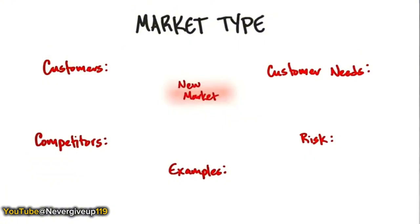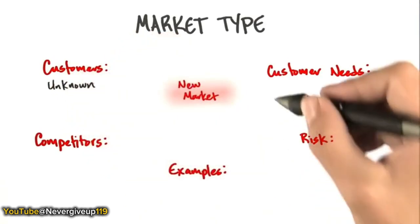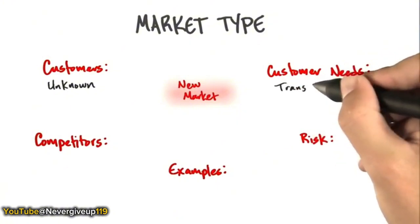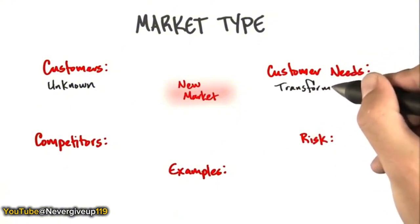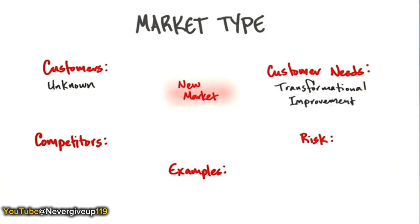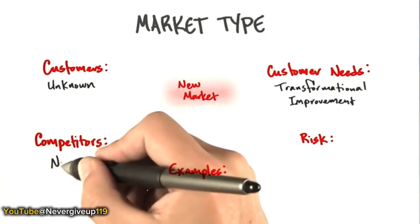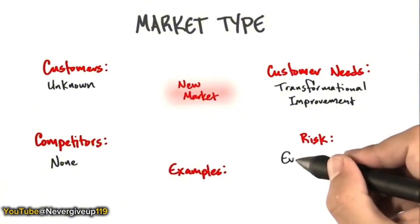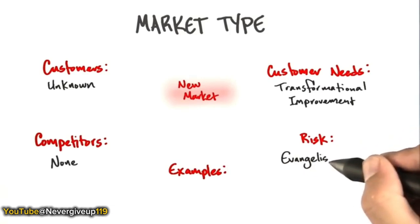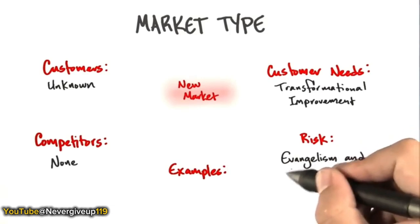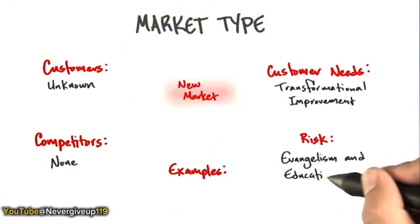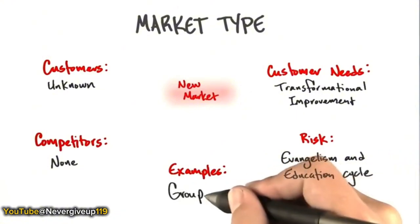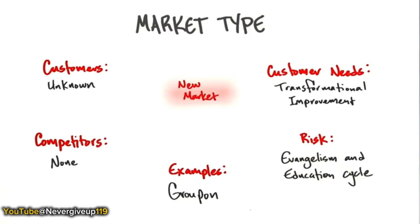In a new market, the customers are really unknown. All you have is a vision and a set of hypotheses. What you're hoping to provide is something transformational — not just incremental improvement, but transformational improvement. The good news and bad news is that there are no competitors on day one. For this market to exist, you're going to have to create it through force of will and a lot of money, requiring evangelism and education. An example: Groupon single-handedly created the daily deals market.